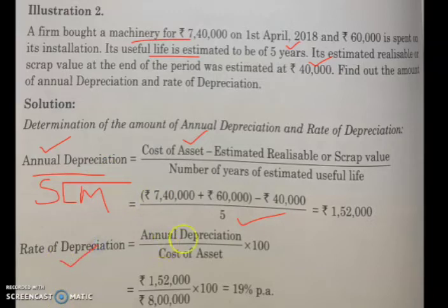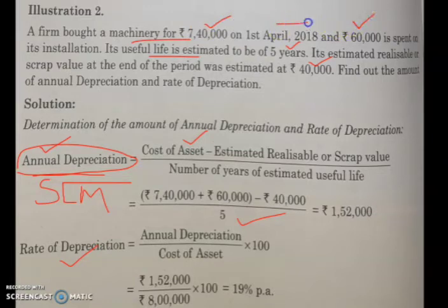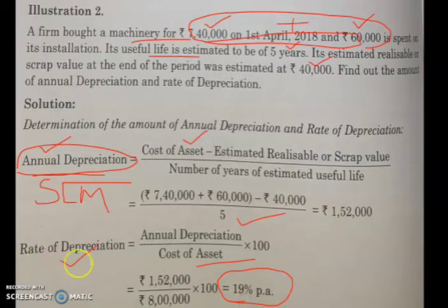The formula for rate of depreciation is: annual depreciation divided by cost of asset. First calculate annual depreciation, then cost of asset — for example, 7,40,000 plus installation charges, which adds up to 8 lakhs. Putting that in the formula gives you 19% per annum as the rate of depreciation.